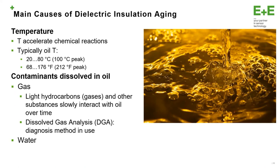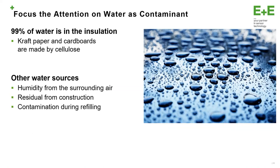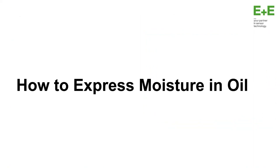The other main source of aging is water. We focus our attention on water as a contaminant, because 90% of the water is already inside the insulation layers, because they are made by paper or cardboard which are made by cellulose. Other sources can be some contamination during the refilling process, or humidity from the surrounding environment — maybe there is some leakage in the tank and not adequate sealing — or there can be some residual from the construction.